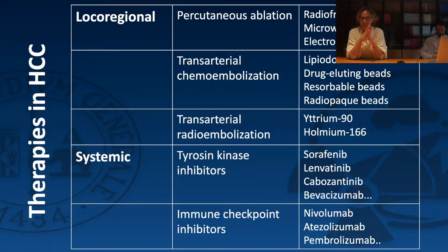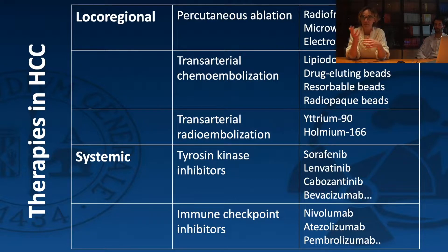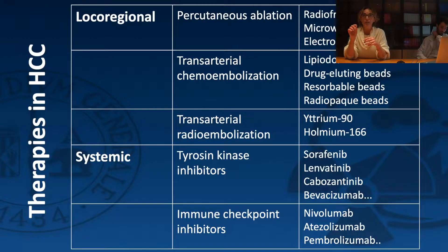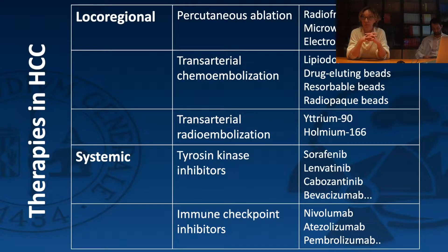HCC is treated with local-regional treatments such as ablation, chemoembolization, and radioembolization, which is an intra-arterial radiotherapy. Today we also have numerous systemic therapies divided into tyrosine kinase inhibitors — like sorafenib, lenvatinib — which end in -ib, and immunotherapy agents which typically end in -ab. The type of treatment changes imaging findings and how we interpret tumor response — and this will be illustrated through clinical cases.